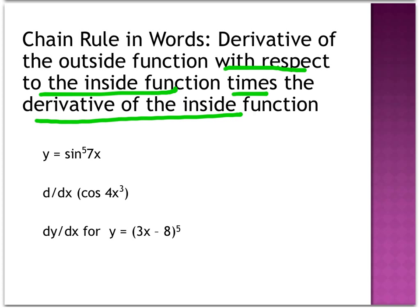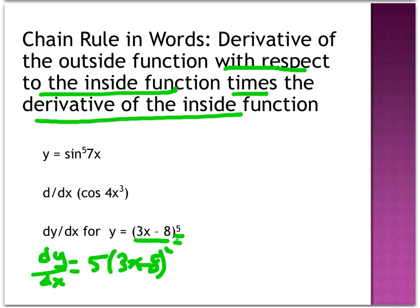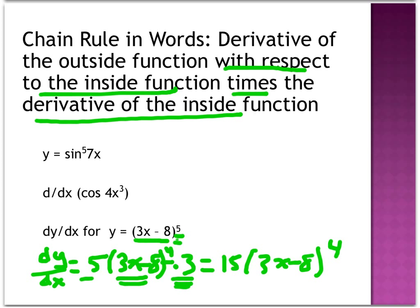Let's start with the third one — it's a little bit easier to see. Because of the parentheses, you can see the inside function and the outside function. I'm going to find the derivative using dy/dx notation. I derive the outside — 5 times — and with respect to the inside means I leave that alone: 3x minus a, and drop the exponent by 1. Then multiply by the derivative of the inside, which is just 3. This simplifies to 15 times (3x minus 8) to the fourth power.